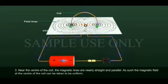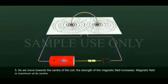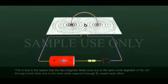Near the center of the coil, the magnetic field lines are nearly straight and parallel. As such, the magnetic field at the center of the coil can be taken to be uniform. The direction of the magnetic field at the center is perpendicular to the plane of the coil. As we move towards the center, the strength of the magnetic field increases and is maximum at the center.